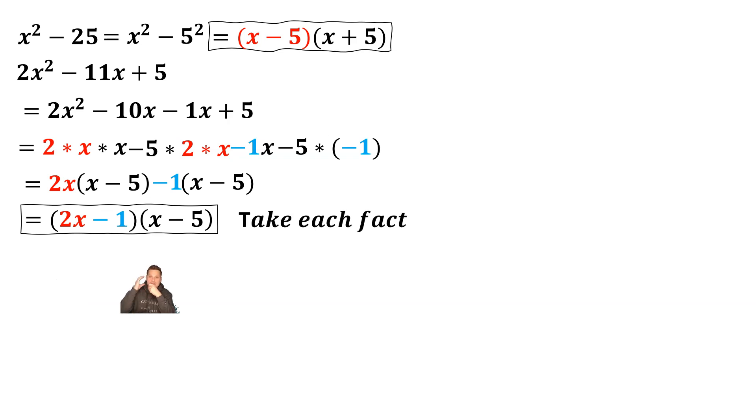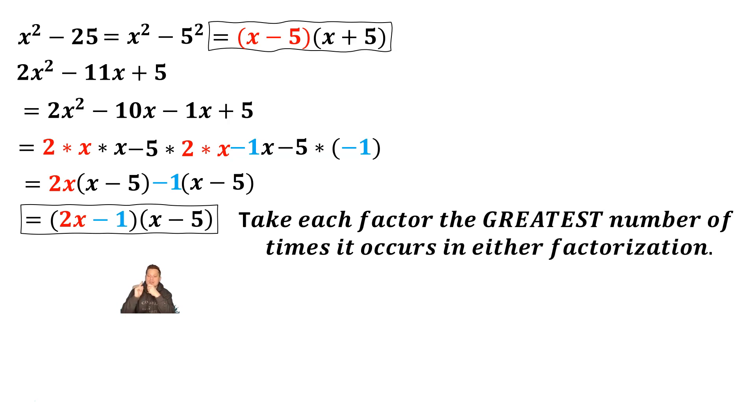Do the following. This is the key fundamental concept. Take each factor the greatest number of times that occurs in either factorization. So for the x minus 5, as you can see, that is present in both factorizations. Well, it occurs once in either one of them. So take it one time down below.